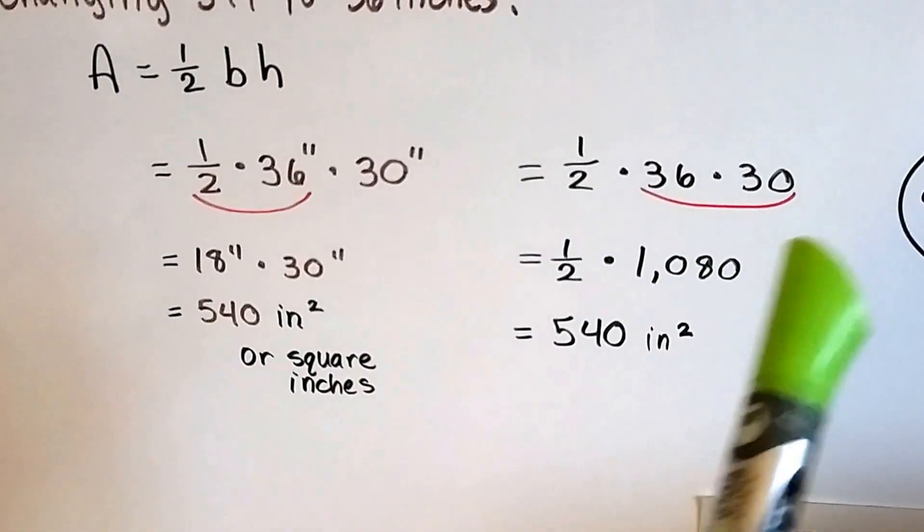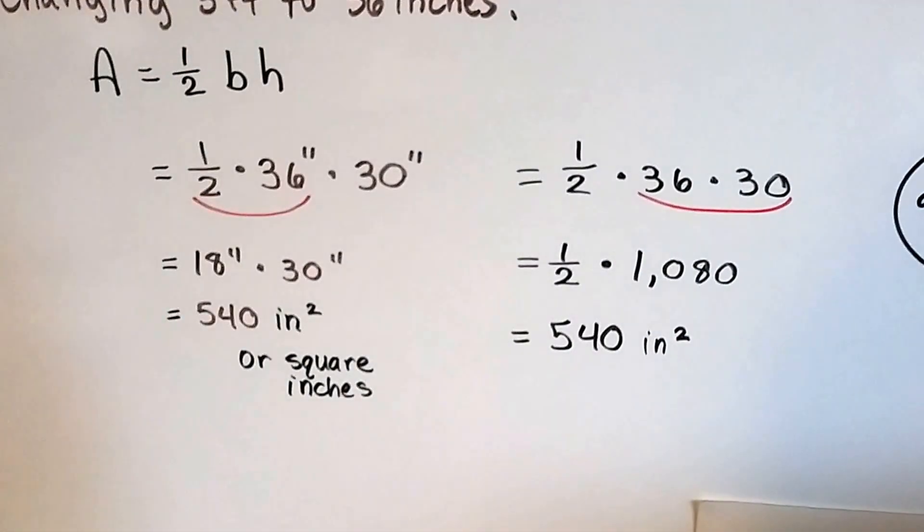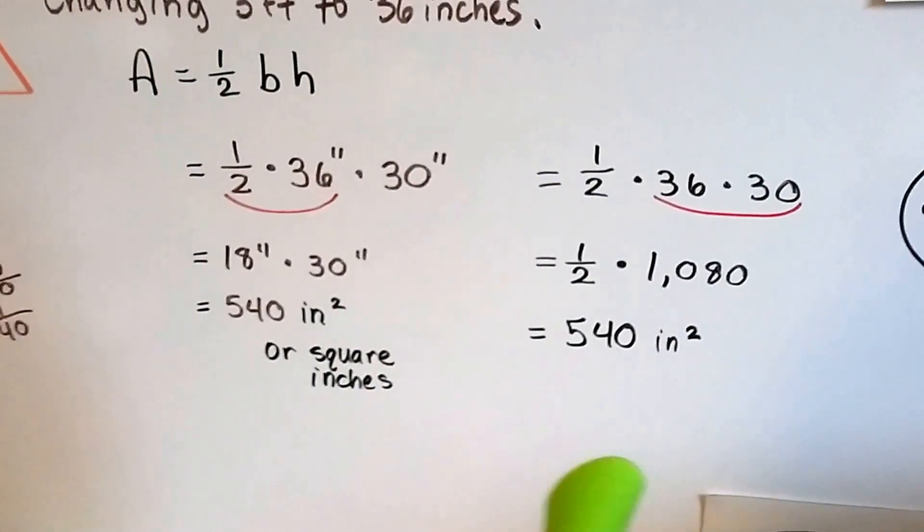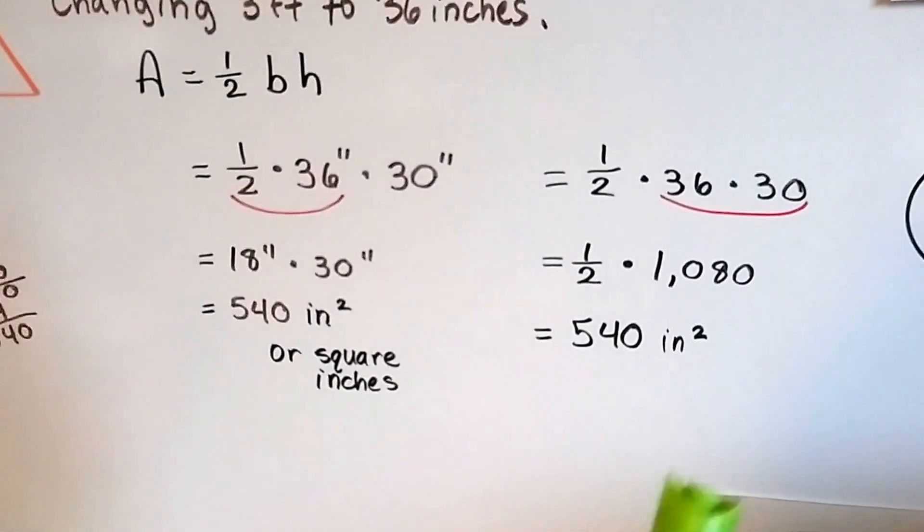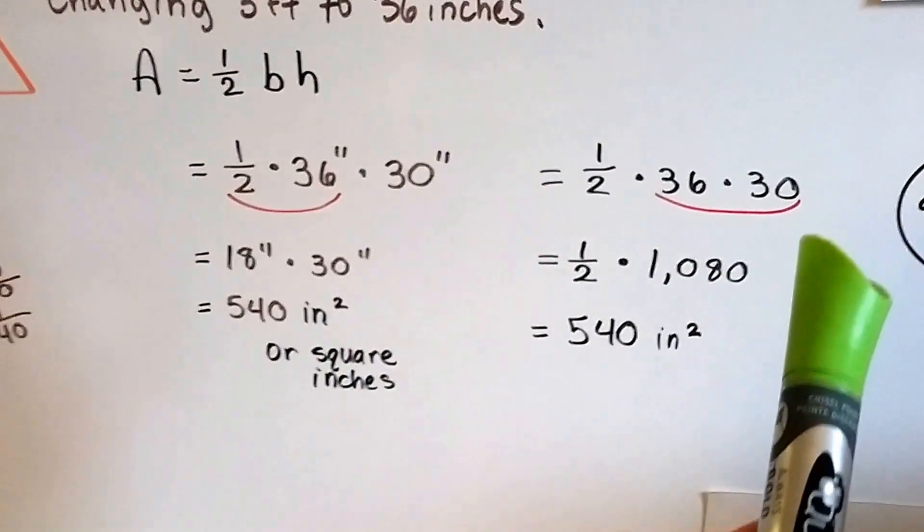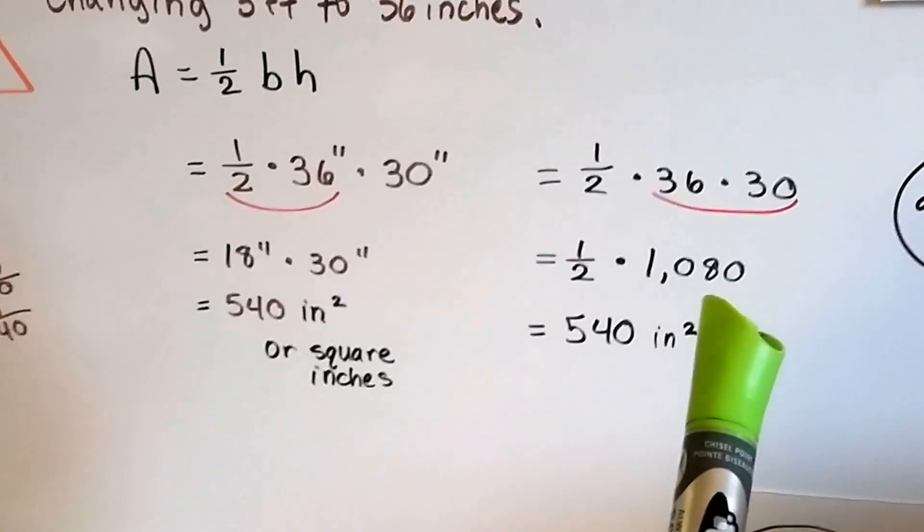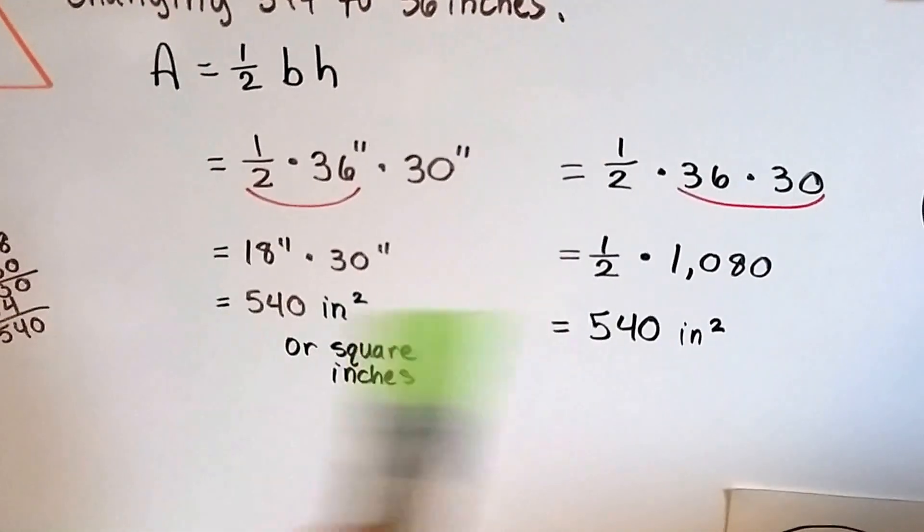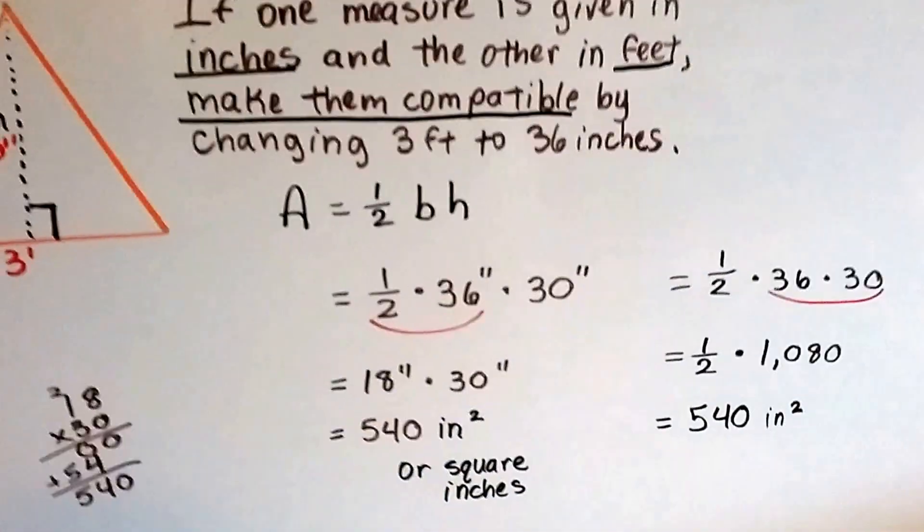We could have grouped these two sides together, right? Because of the associative property, it says it doesn't matter. Associative property of multiplication says it doesn't matter which ones we multiply first. So we could have multiplied 36 times 30 and got 1,080, and then divided that in half to get the 540 inches squared. Either way, it wouldn't have mattered. Associative property.